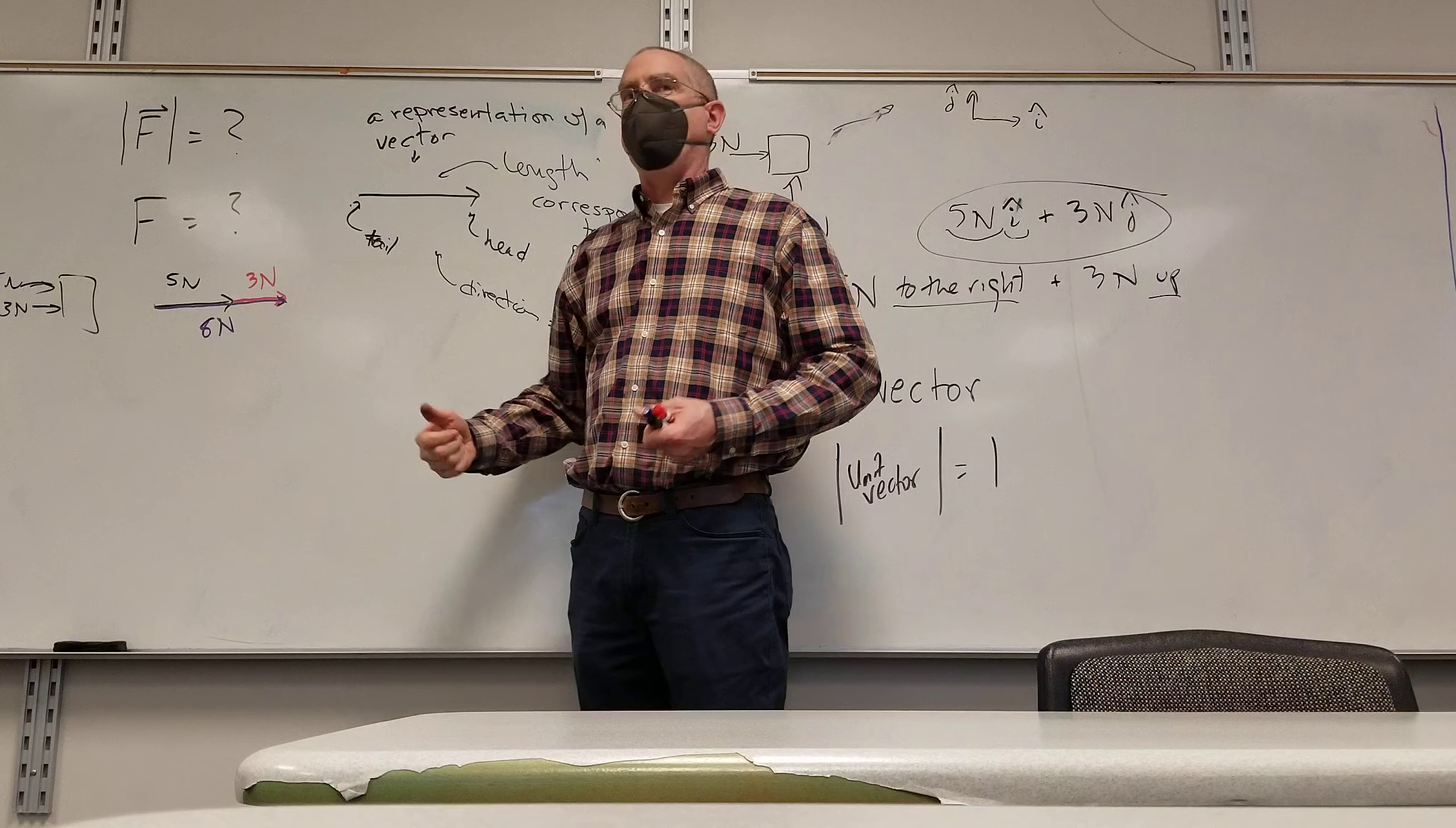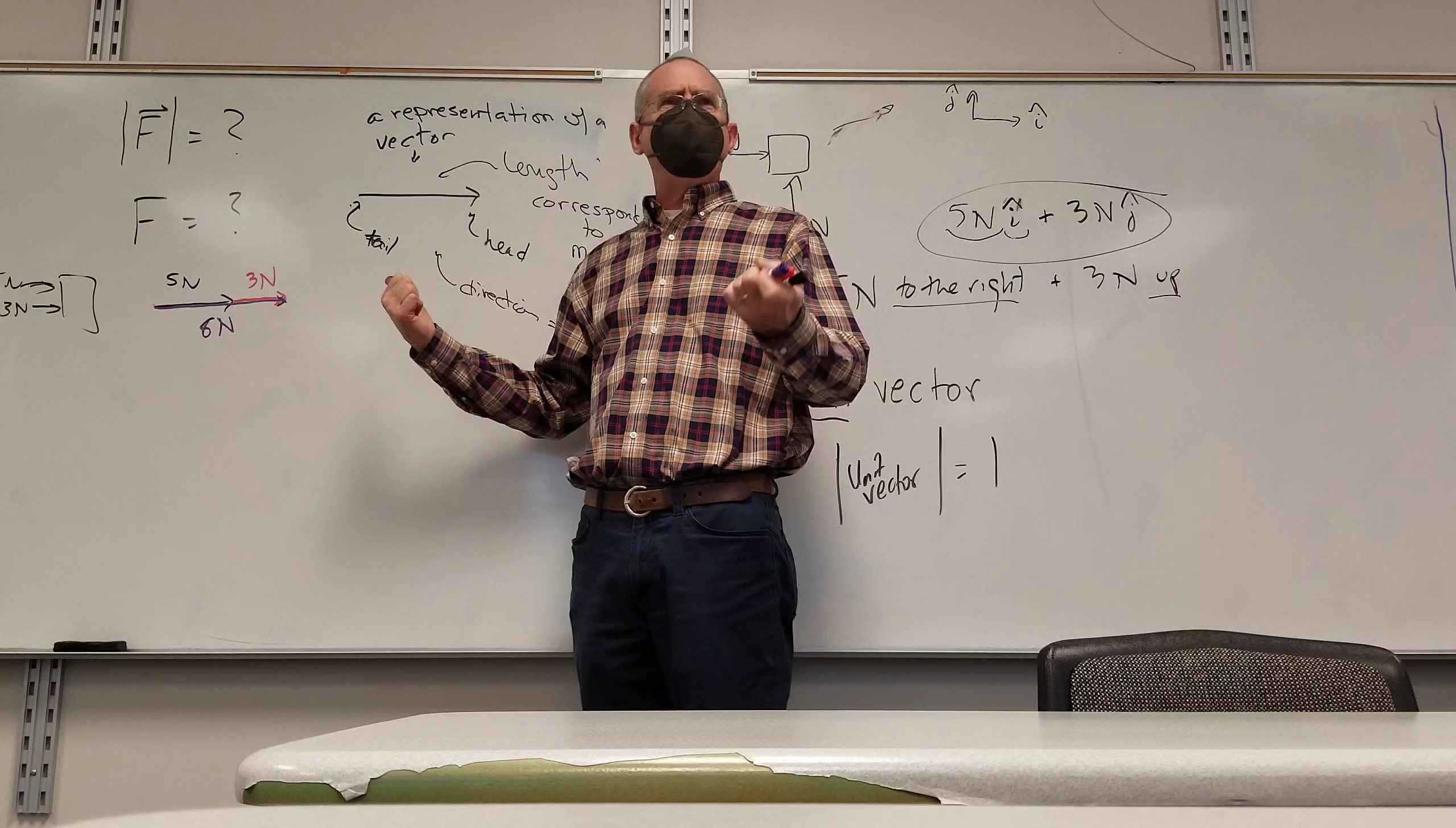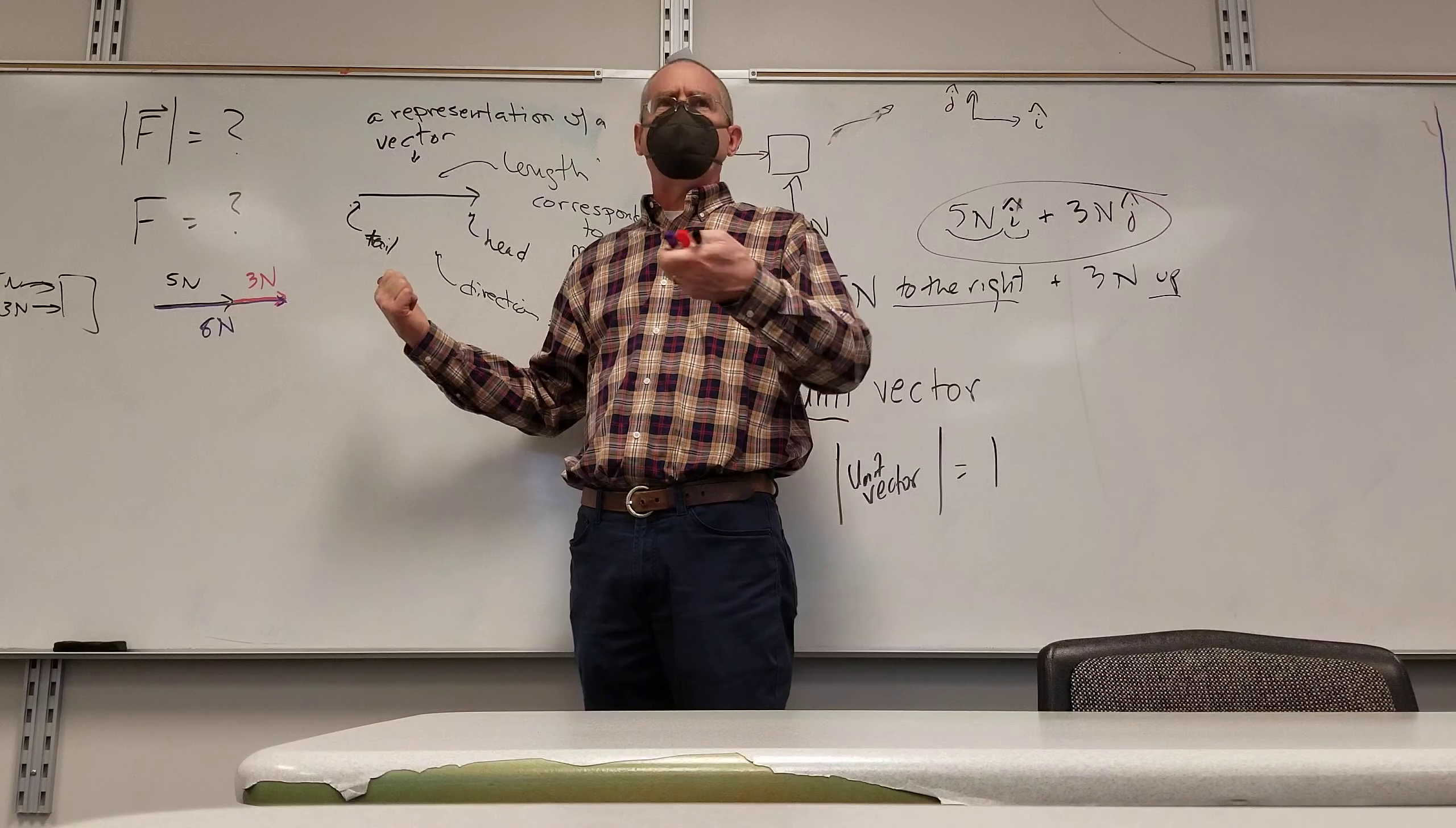So it's 5 newtons to the right, plus 3 newtons to the right is 8 newtons to the right. Sort of the visual of what we've done already. When you first start doing addition, that's basically number line stuff.